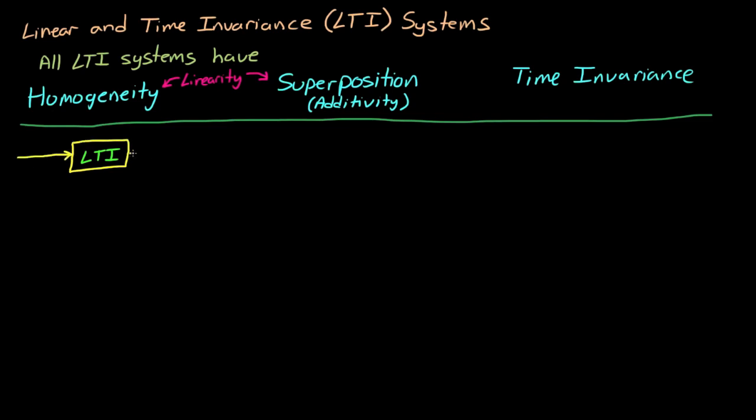Let's say you have an LTI system, represented here in block diagram form, and you subject it to an arbitrary input x of t, and it produces output y of t. Homogeneity states that if you scale the input by factor a, then the output would be scaled by the same factor.